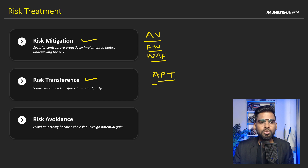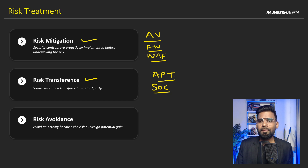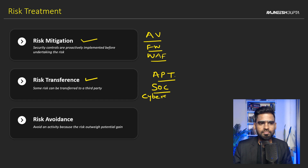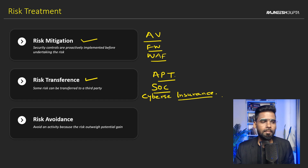You can transfer those risks to a third party such as an outsourced SOC team, in exchange for an AMC or whatever pricing structure you prefer. It can also be a solution like cybersecurity insurance. That's what risk transference is all about.